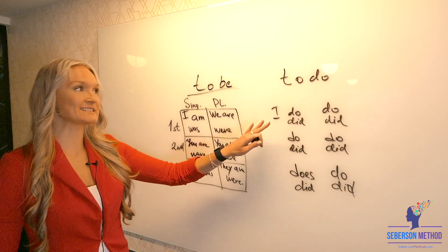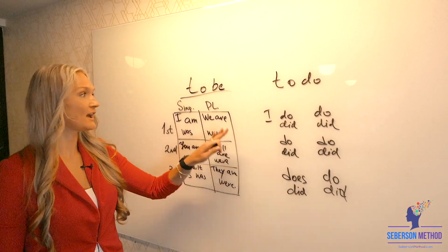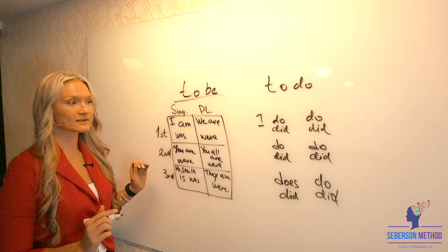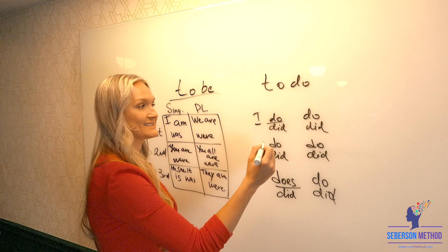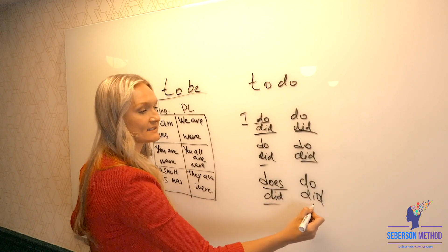You can notice that the verb to do doesn't change as much as the verb to be. There is only one variation do and does. And in the past tense it's always the same. Did.